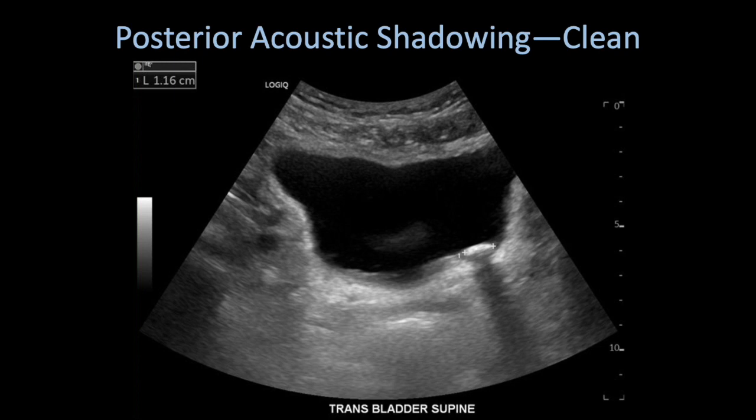In this episode we're going to focus on clean posterior acoustic shadowing. Clean posterior acoustic shadowing usually happens in the setting of calculi. In this example here you can see a bladder that contains an echogenic structure or layering bladder calculus with posterior acoustic shadowing.